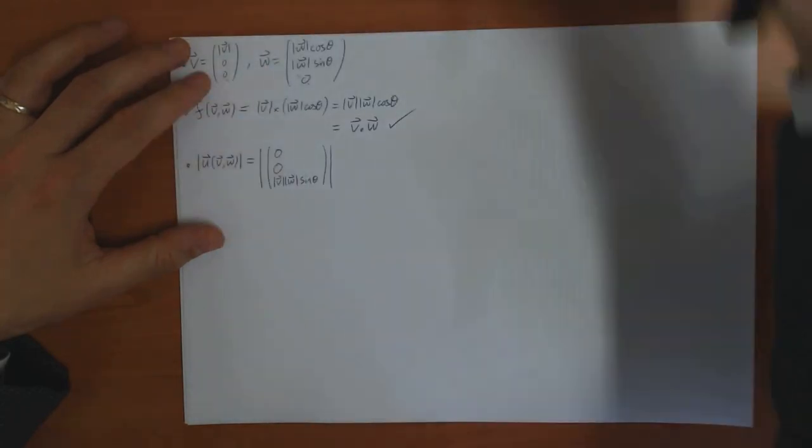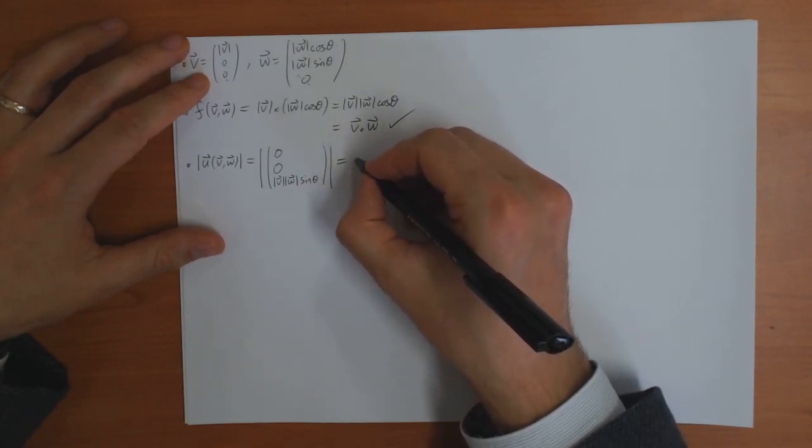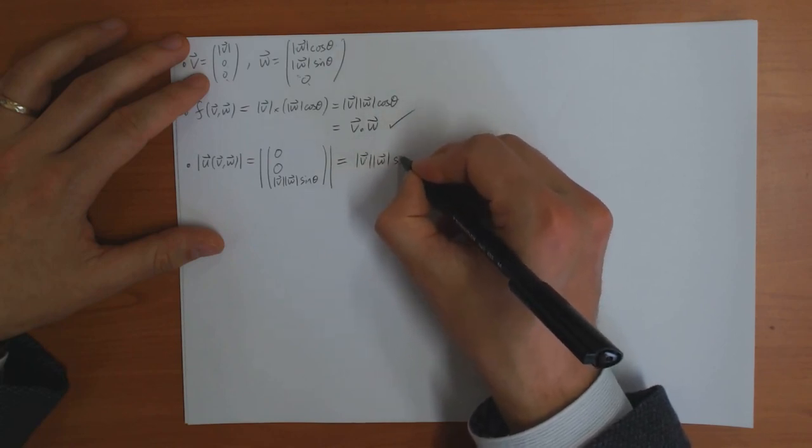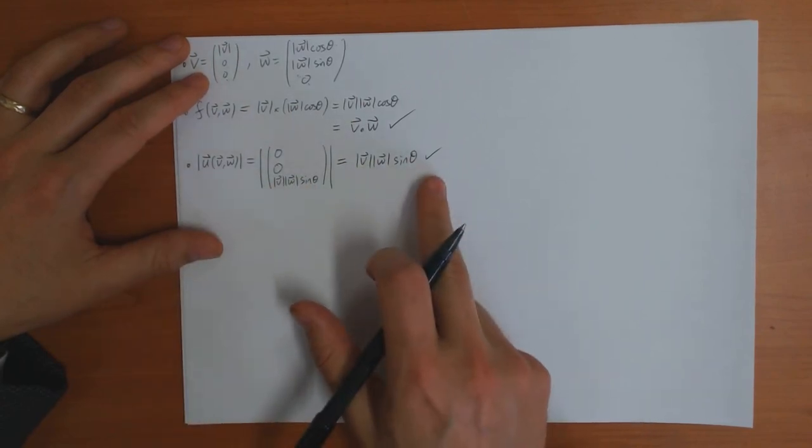So I have that, which is equal to length of v, length of w, sin theta. Okay. So that's right. So it's got the right length of this vector.